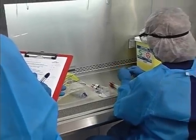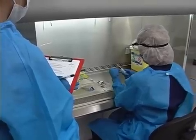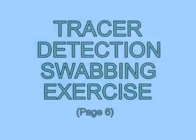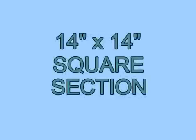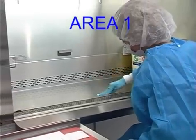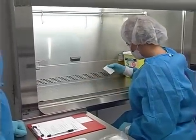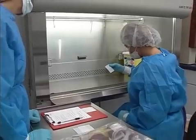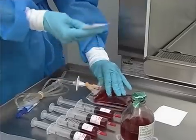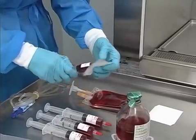Upon completion of the compounding activities, when the candidate has removed all products from the hood for inspection but before completing any cleaning or additional degowning, perform the tracer detection swabbing exercise on page six of the Chemotech package insert by thoroughly swabbing a 14-inch by 14-inch square section of the following areas for recovery of any red or pink residue. Area 1: The work surface of the BSC following proper disposal of chemo mat, if used.